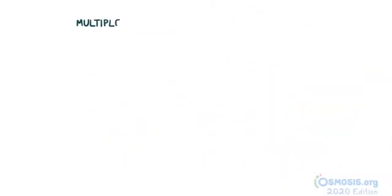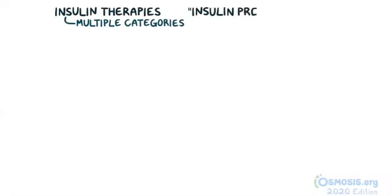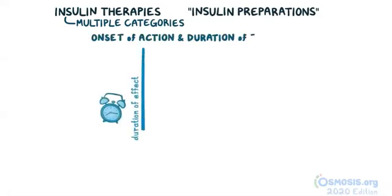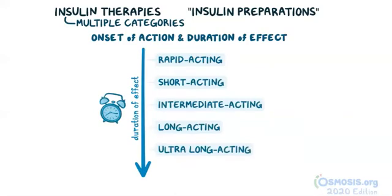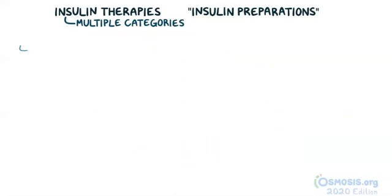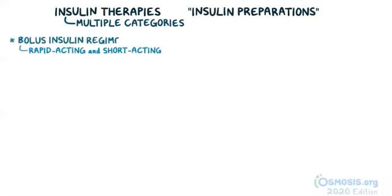There are multiple categories of insulin therapies, more commonly referred to as insulin preparations. These preparations are categorized according to their onset of action and duration of effect, and they include rapid-acting, short-acting, intermediate-acting, long-acting, and ultra-long-acting insulins. Rapid-acting and short-acting insulins are used for bolus insulin regimen where they are taken before each meal to counteract the post-meal increase in blood glucose.